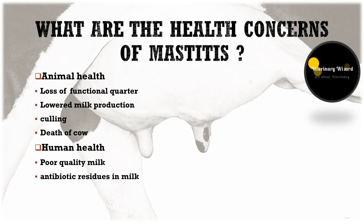Mastitis affects both animal and human health directly and indirectly. Regarding animal health, lack of functional quarter leads to lowered milk production and ultimately culling or death of the animal. It affects human health through poor quality milk and antibiotic residues in milk, which causes antibiotic resistance.